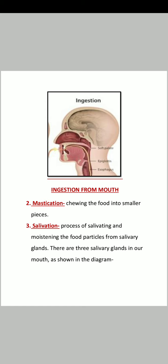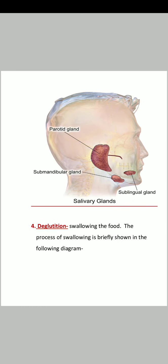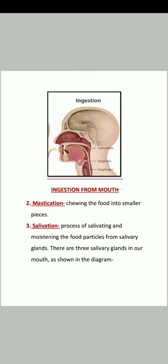Next is salivation — the process of salivating and moistening the food particles from salivary glands. In your mouth there are three pairs of salivary glands: the parotid gland, submandibular gland, and sublingual gland. These salivary glands release saliva in your mouth, moistening the food particles so that they can pass frictionlessly through the GIT tract.